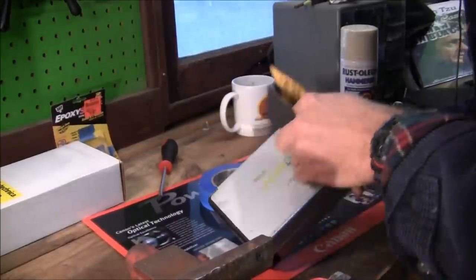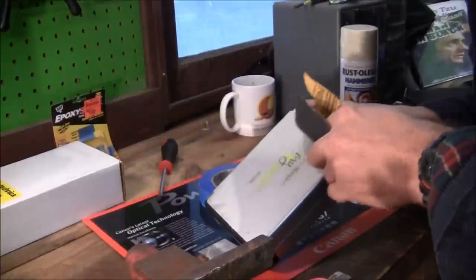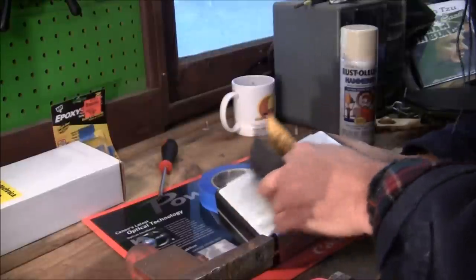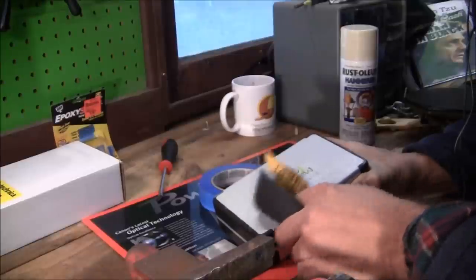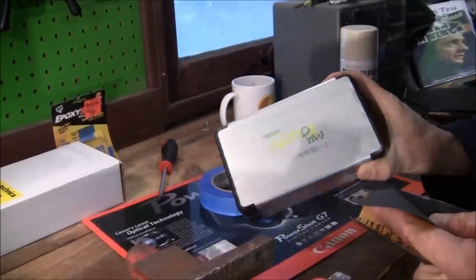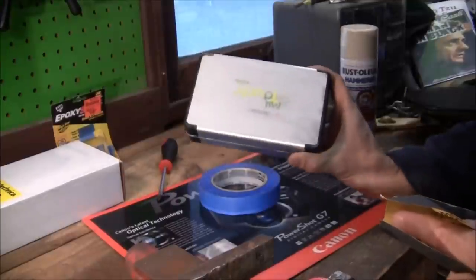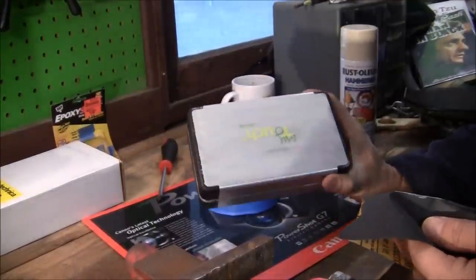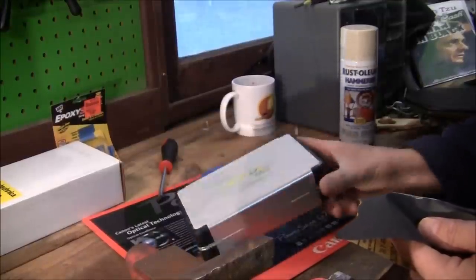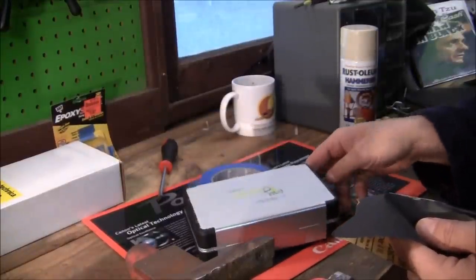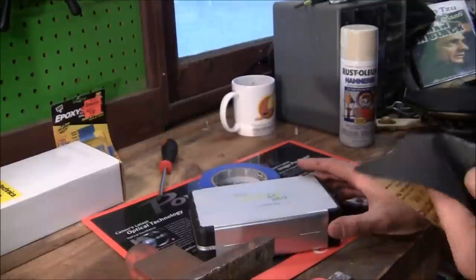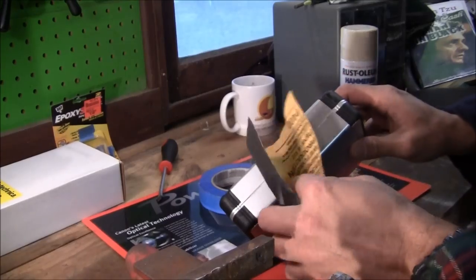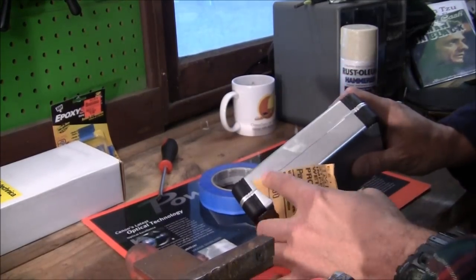The reason why I'm sanding it down before I paint it is it's nice, shiny, glossy plastic. And if you're going to paint, especially using something like Rust-Oleum, it needs to have a little bit of a tooth. So if you use something like 400, you can just kind of knock some of the gloss off of it, and it will give it a tooth.